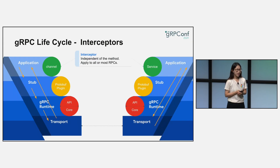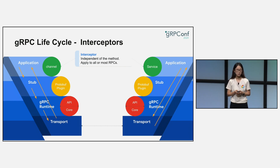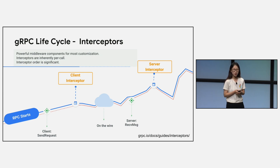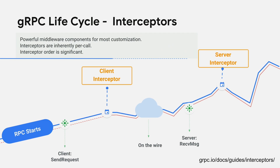A few bonus tips for core concepts in the gRPC lifecycle. At the channel and server layer, interceptors are useful tools to add tasks that are independent of specific methods but apply to all or most RPCs. Interceptors are very powerful middleware tools to modify or replace your calls before and after they reach their destination, on both the client and server side. This provides a very clean way to address cross-cutting concerns like logging, authentication, authorization, error handling, and monitoring, without cluttering your main application logic.